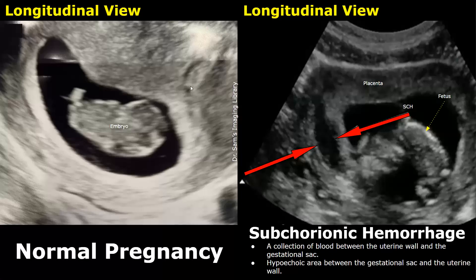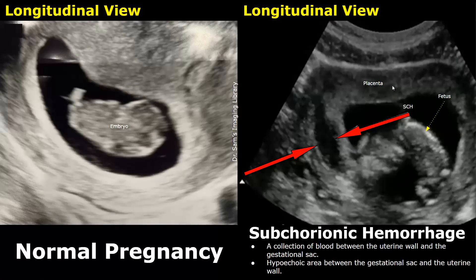And over here, we have a case of subchorionic hemorrhage. This pregnancy is more advanced than the image on the left. A subchorionic hemorrhage appears as a hypoechoic, dark area between the gestational sac and the uterine wall. The placenta is also present here. It is common for the hematoma to be seen near the margin of the placenta.